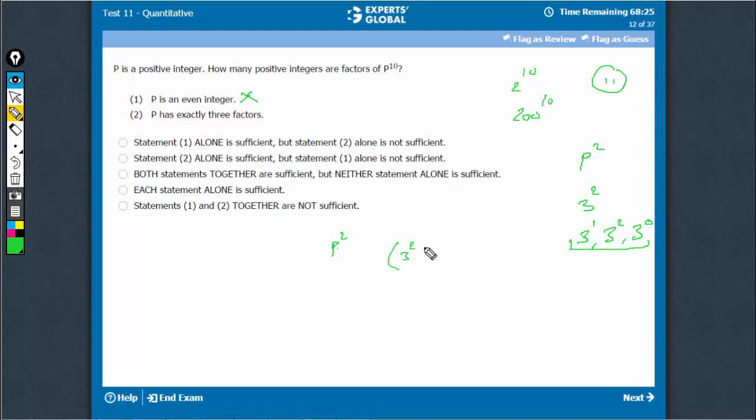So, P raised to power 10 would be 3 raised to power 10, which is 3 raised to power 20. This 3 could be 2, 5, any other prime number, but whichever way,